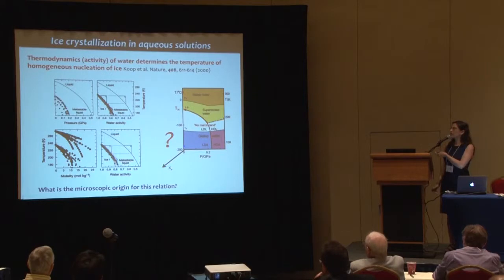Now I'll discuss the competition between vitrification and crystallization in solutions, and particularly what determines the freezing temperature of water in solutions. Taking the liquid at room pressure and adding solutes is another dimension in the phase diagram. There have been many independent studies and compilations on the effect of solutes and pressure on the freezing point of water, with the most comprehensive being the one by Koop and co-workers in 2000 published in Nature.